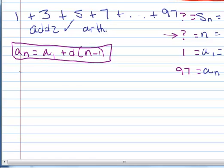Well, I know a sub n. That's 97 because that's my last term. A sub 1 is my first term, and that's 1. I know d because I just calculated that out here to make sure this was arithmetic. So that's 2. I don't know n. That's what I'm trying to find. That's why I'm using this formula.